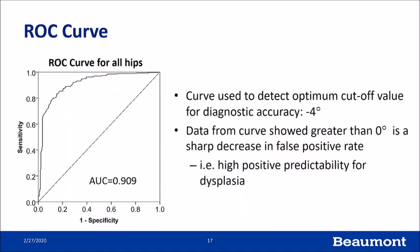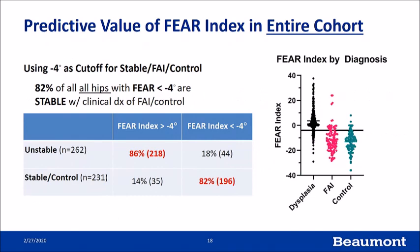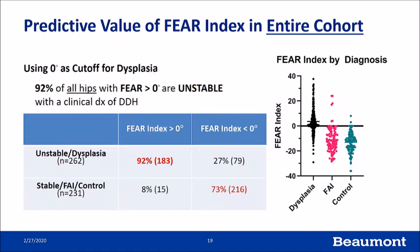We constructed a receiver operator characteristics curve and determined that the optimal cutoff for diagnosis was minus four degrees. Further data from the curve suggested that using a value of zero degrees for dysplasia or instability would sharply decrease the false positive rate. Using minus four degrees as a cutoff for stability correctly identified 82% of hips considered stable, and using greater than zero degrees for instability correctly identified 92% of hips categorized as unstable.